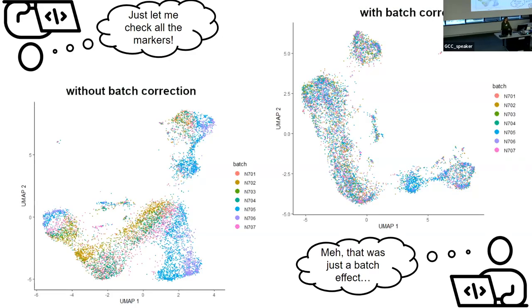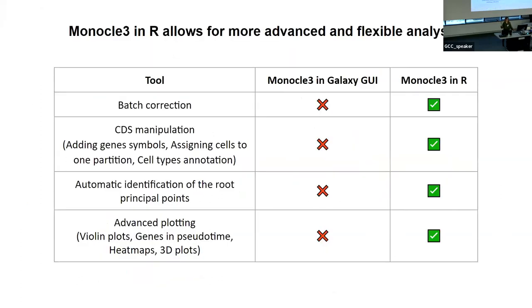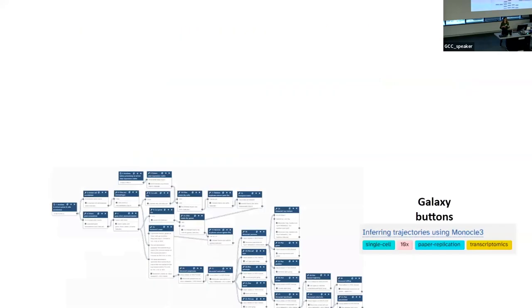I decided to check that out. I checked all the gene markers, and a couple of weeks later I discovered it was just a batch effect. After applying batch correction on this data set, this weird branch just disappeared. However, I had to do it in Monocle in R because the batch correction function hasn't been wrapped into a Galaxy Tool yet, as well as some other functions available in Monocle in R but not available as Galaxy buttons.